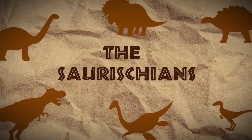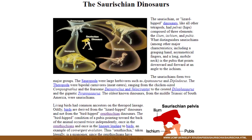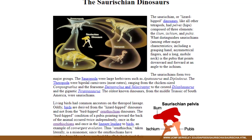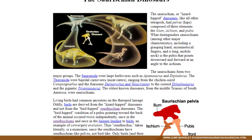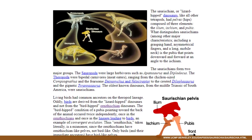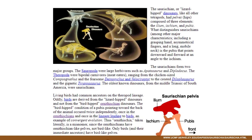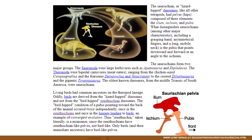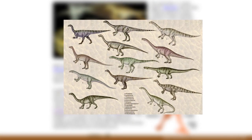Saurischians are distinguished from Ornithischians by having a grasping hand that is nearly half as long as the rest of the arm or longer, asymmetrical fingers, and a long mobile neck. The Saurischians formed two major groups: sauropodomorpha and theropoda. Sauropodomorphs were large quadrupedal herbivores such as Brontosaurus and Diplodocus — the name comes from Greek meaning 'lizard-footed form.' While they are plant eaters, early sauropodomorphs were speculated to have been omnivores since their closest relatives are carnivores. This group also contains the prosauropods, the sauropods' ancestors.